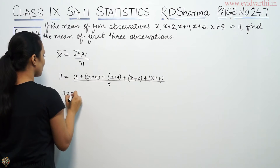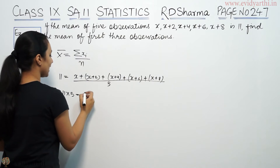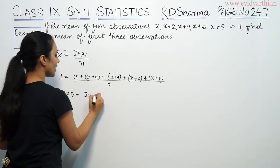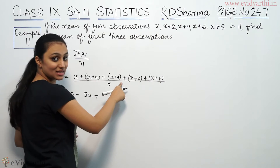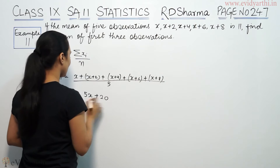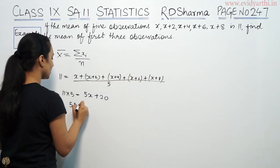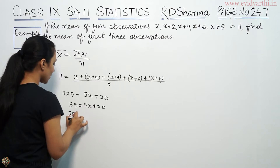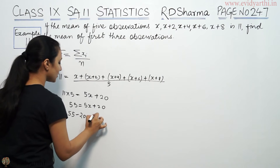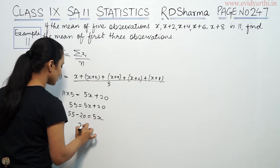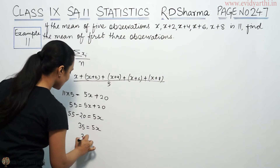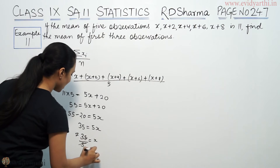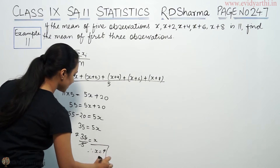So that would be 11 into 5. x plus x plus x plus x plus x is 5x. And 2 plus 4 is 6, plus 6 is 12, plus 8 is 20. So 55 equals 5x plus 20. That gives 35 equals 5x, so 35 divided by 5 equals x. So x's value is 7.